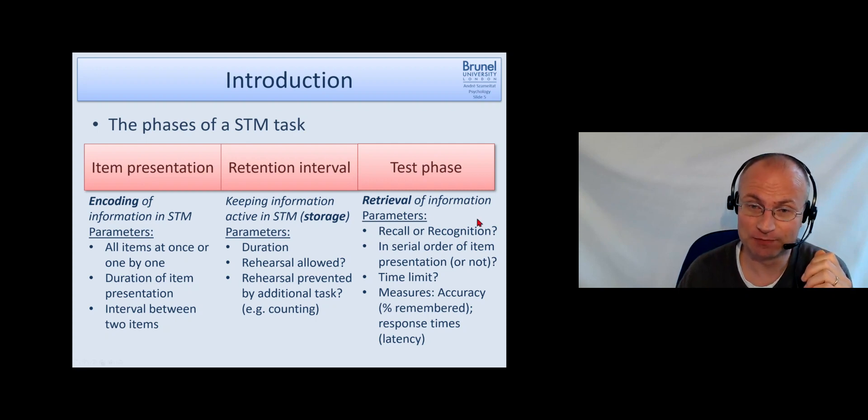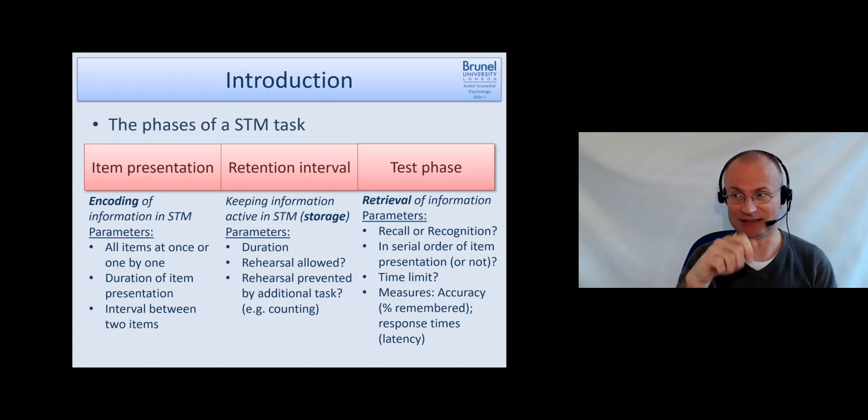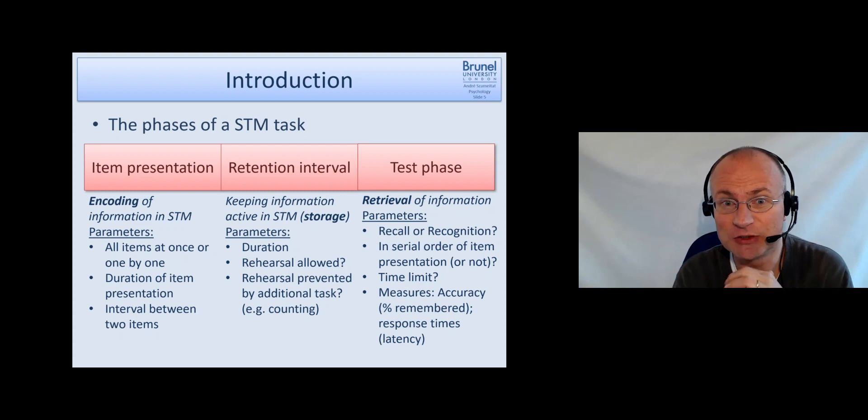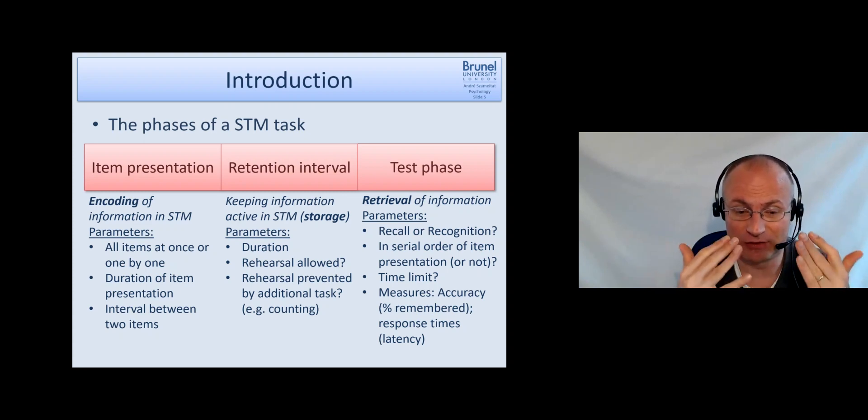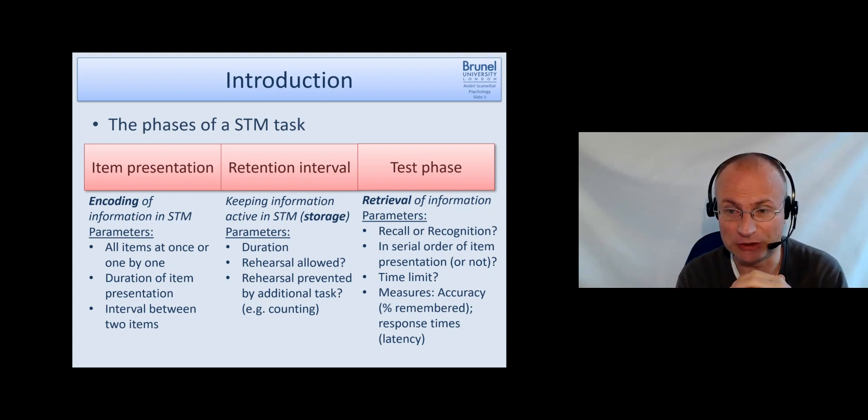The other one is recognition. Recognition usually works like this: let's say you had to learn ten words, and then in the test phase you are given twenty words - the ten words you have learned and ten new words you haven't learned. For each word you have to say yes, it was in the list I have learned before, or no, it wasn't in the list I have learned before. This usually results in better performance in the participants because you get this cue - you say the word, so recognizing something is easier than recalling.